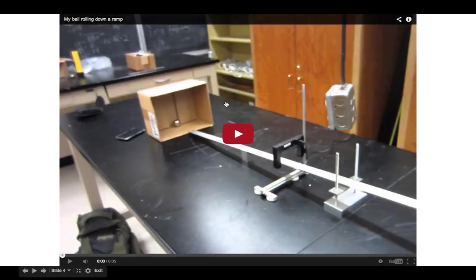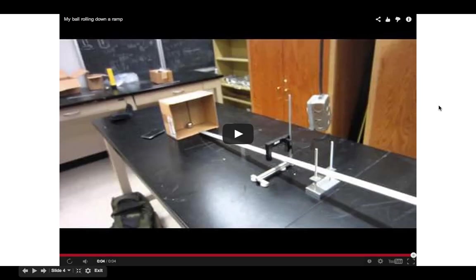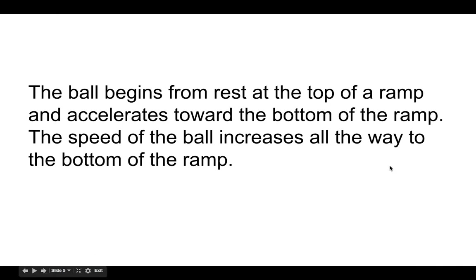Let's look at an example. I'll show a quick video clip, and then you can see the narrative description that would go with it. Pretty simple motion here — my narrative is going to start the moment the ball is released from the person's finger and end the moment before it gets to the box at the end. For the narrative description, I would say that the ball begins from rest at the top of the ramp and accelerates toward the bottom of the ramp. That's one key moment — that's where the ball begins, and nothing really changes all the way down to the bottom. It's really just two key moments: the beginning and the end.